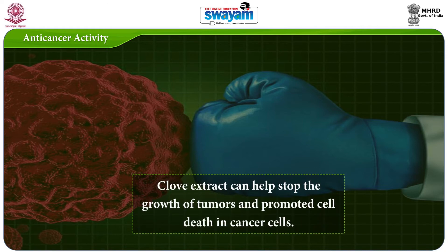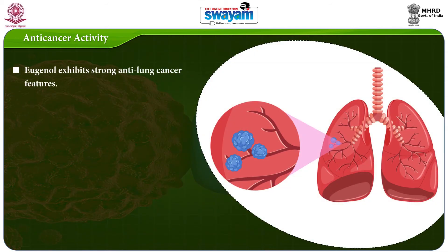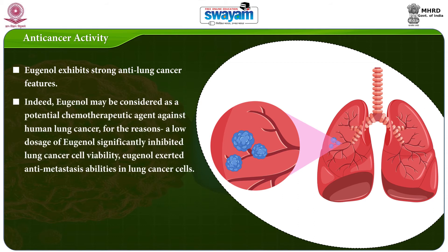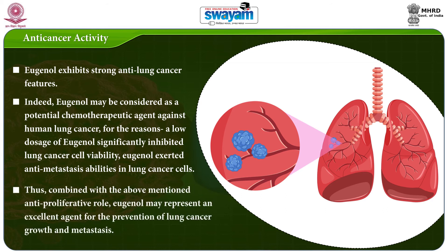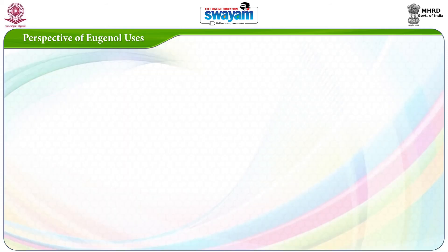The next activity is anti-cancer activity. Clove extract can help stop the growth of tumours and promote cell death in cancer cells. Eugenol exhibits strong anti-lung cancer features and may be considered a potential chemotherapeutic agent against human lung cancer. A low dosage of eugenol significantly inhibited lung cancer cell viability, and eugenol exerted anti-metastasis abilities in lung cancer cells. Thus, eugenol may represent an excellent agent for the prevention of lung cancer growth and metastasis.